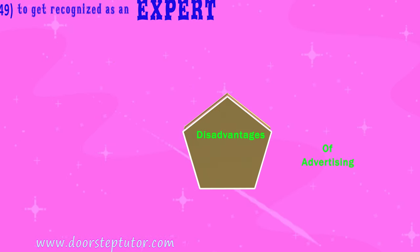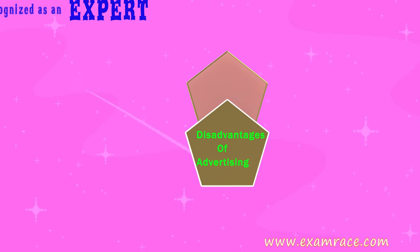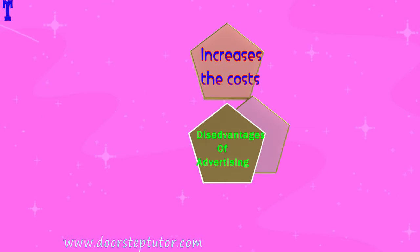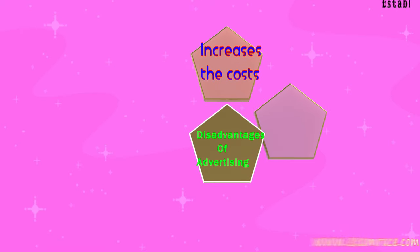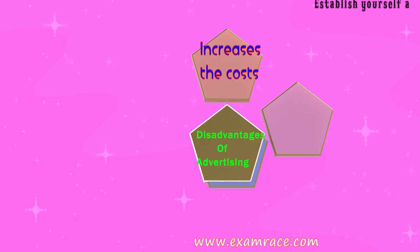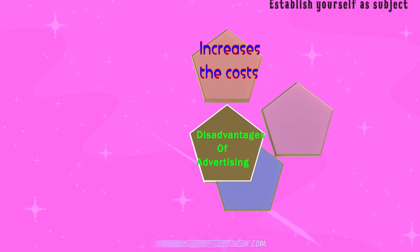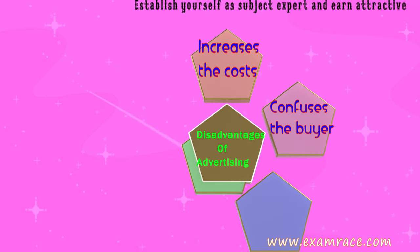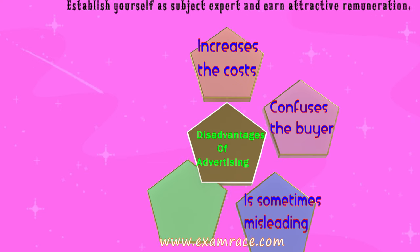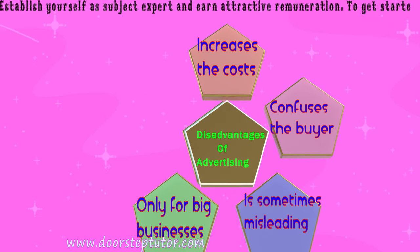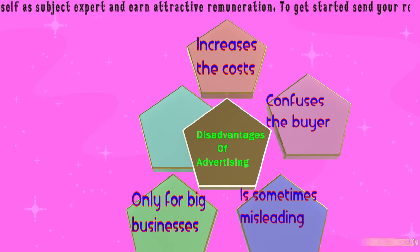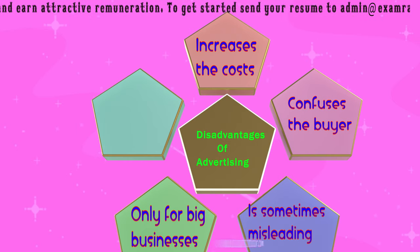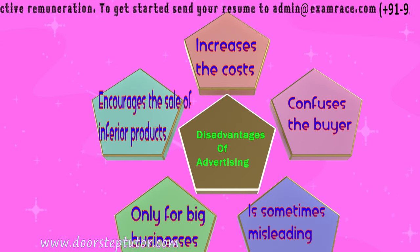These are the disadvantages of advertising. Even though per unit cost decreases, the overall cost of the product or business increases — this is the first demerit. The cost of the product increases because the amount spent on advertisement is high, so the product cost automatically becomes high. It also confuses or sometimes misleads the buyer. Advertisement is suitable only for big businesses; small businesses cannot afford it. Another disadvantage is that it can encourage the sale of inferior products.